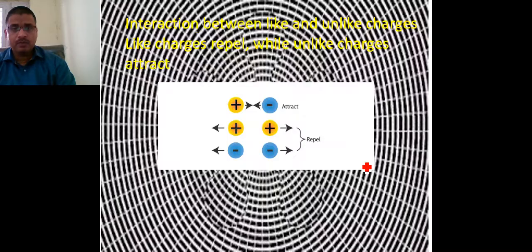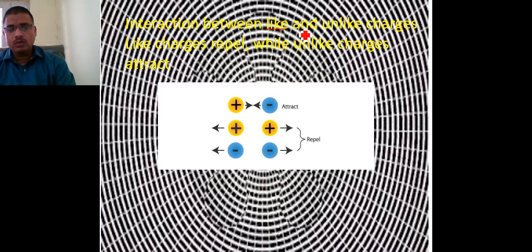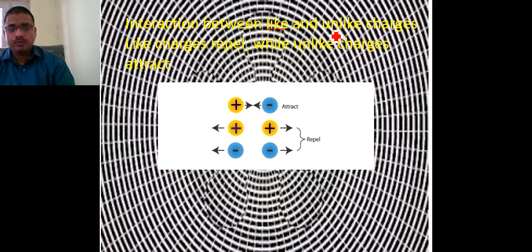Interaction between like charges means positive-positive or negative-negative. If both objects carry positive charge or both carry negative charge, these are called like charges. If one object carries positive and another carries negative charge, these are called unlike charges. Like charges repel each other, while unlike charges attract each other.